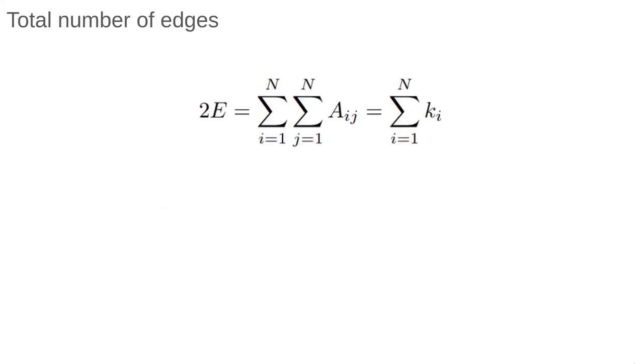For an undirected network, the number of items in the edge set is twice the number of lines we can see on the network. This is because we only draw one line to represent a two-way connection between A and B. Remember that we have both edge AB and the edge BA. The sum of all the elements in the adjacency matrix is 2E, where capital E is the number of lines we can see on the network diagram. This sum is also given by adding up the degrees of all the nodes. Once again, pause and make sure you understand why.